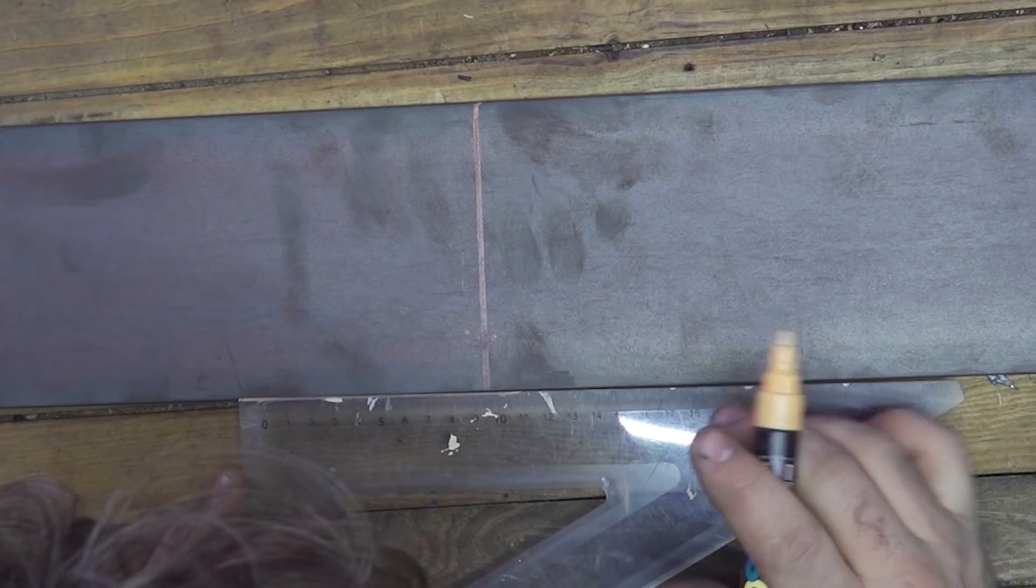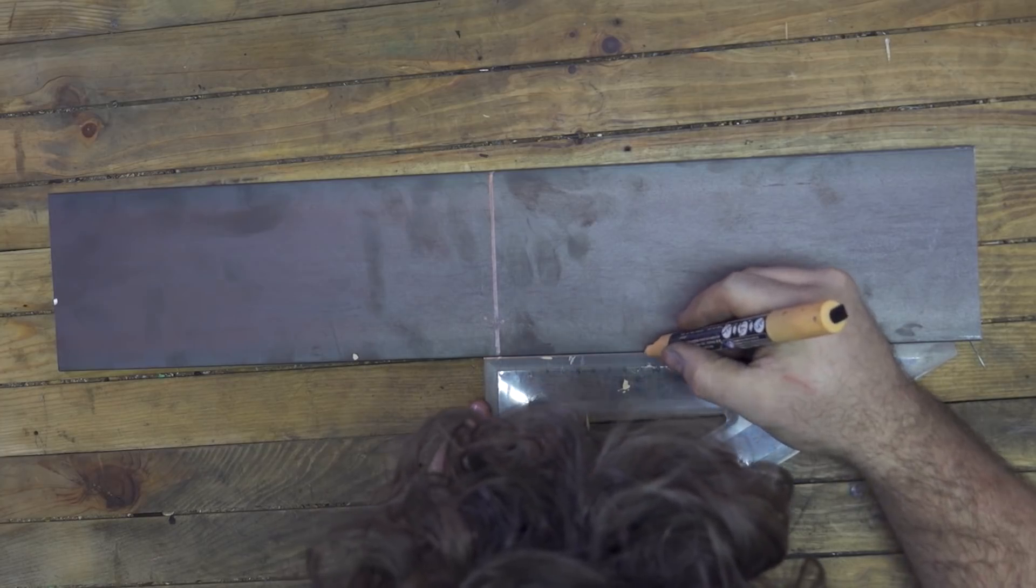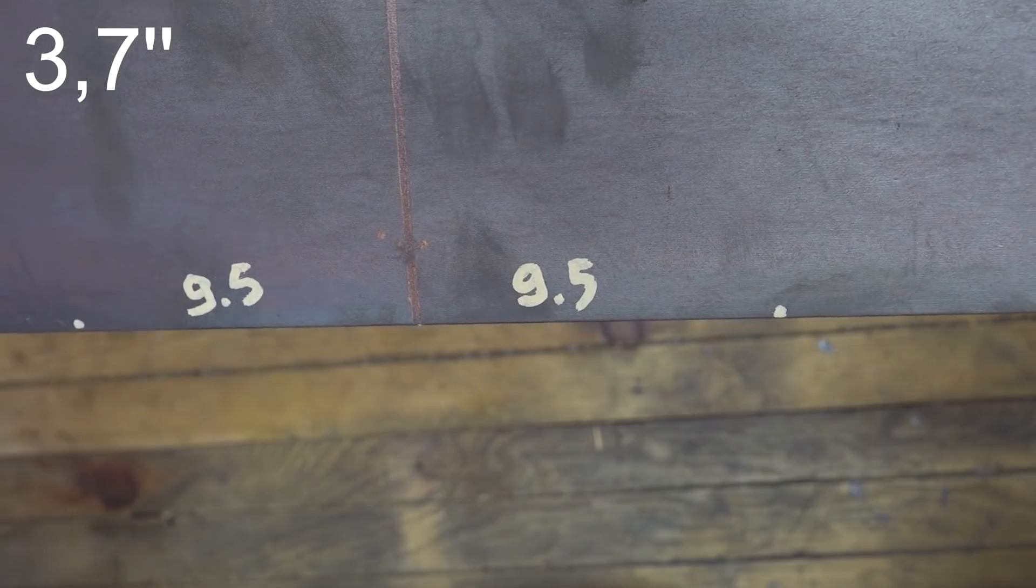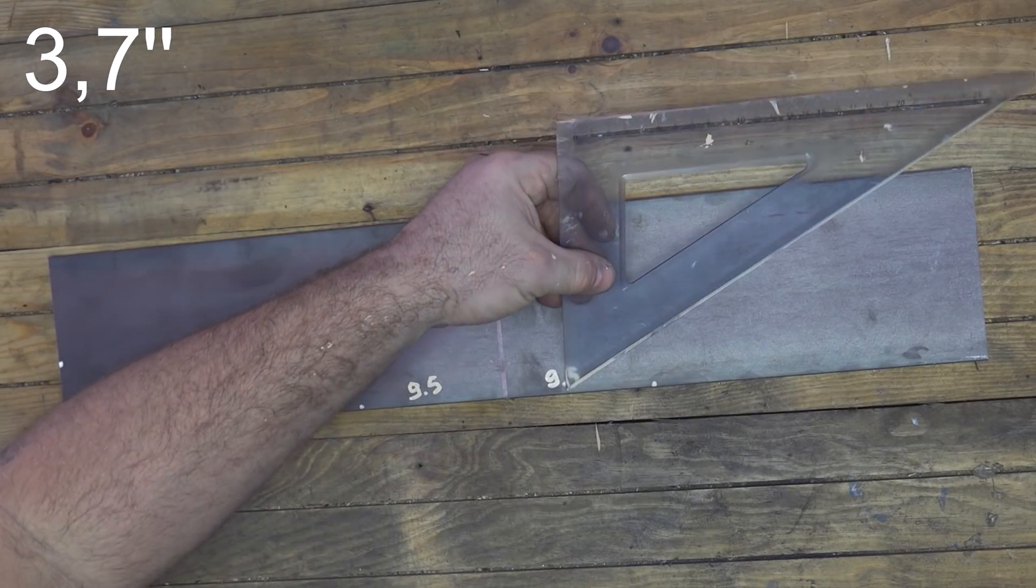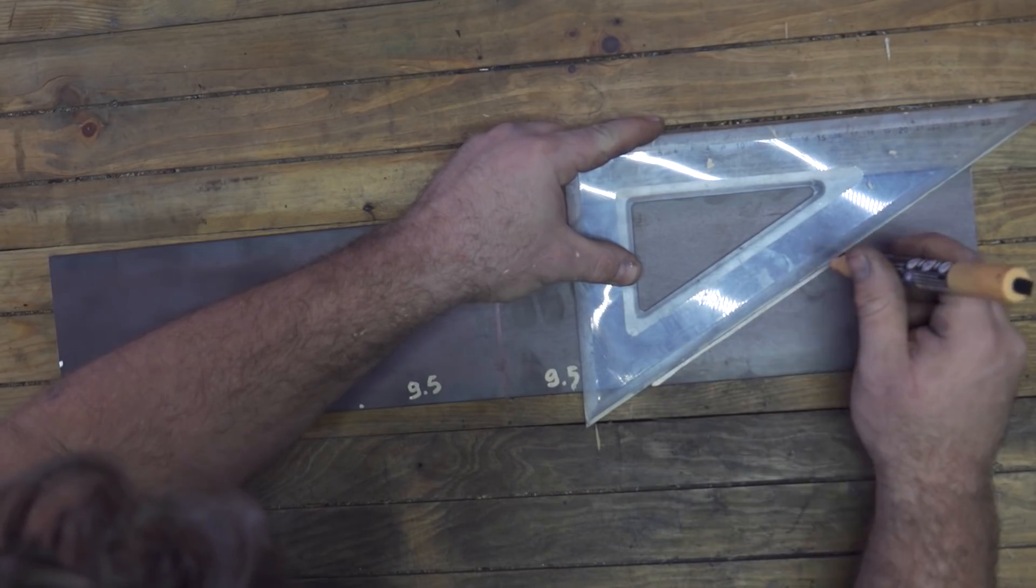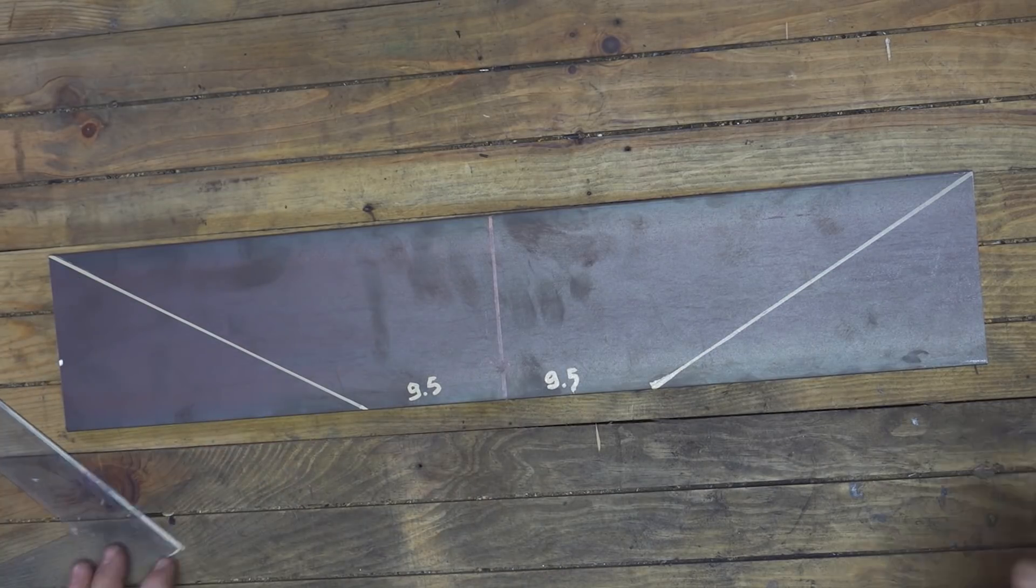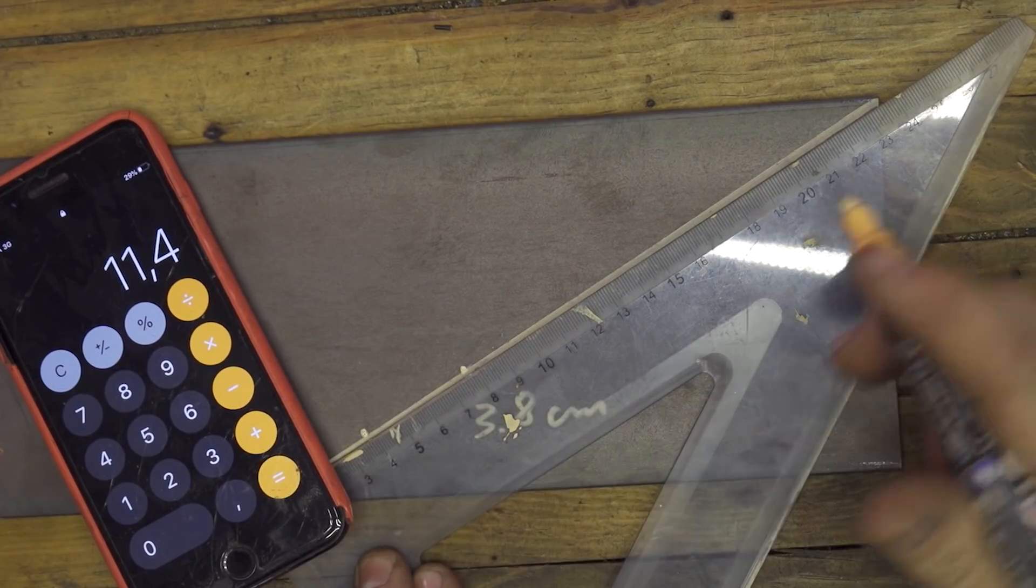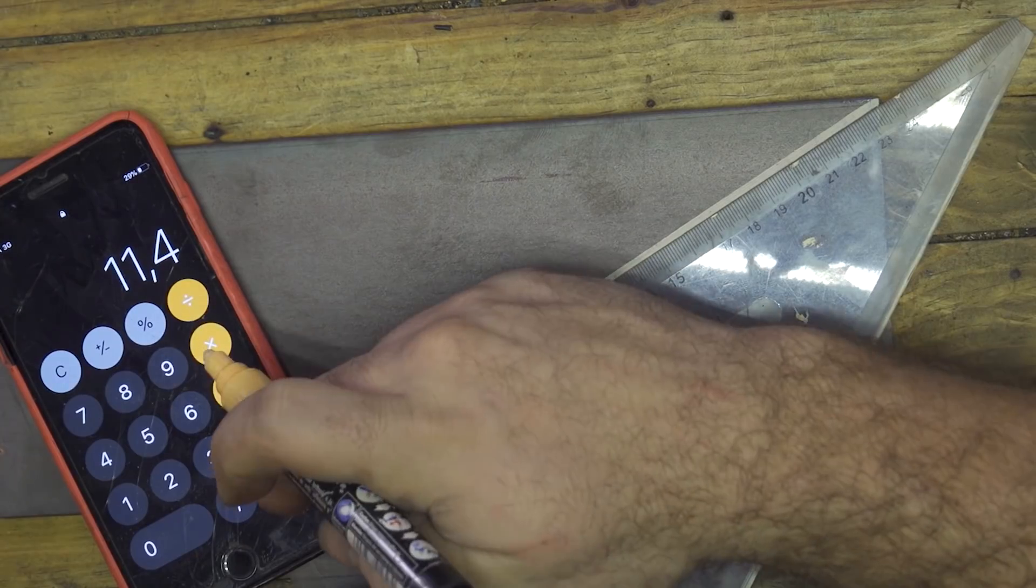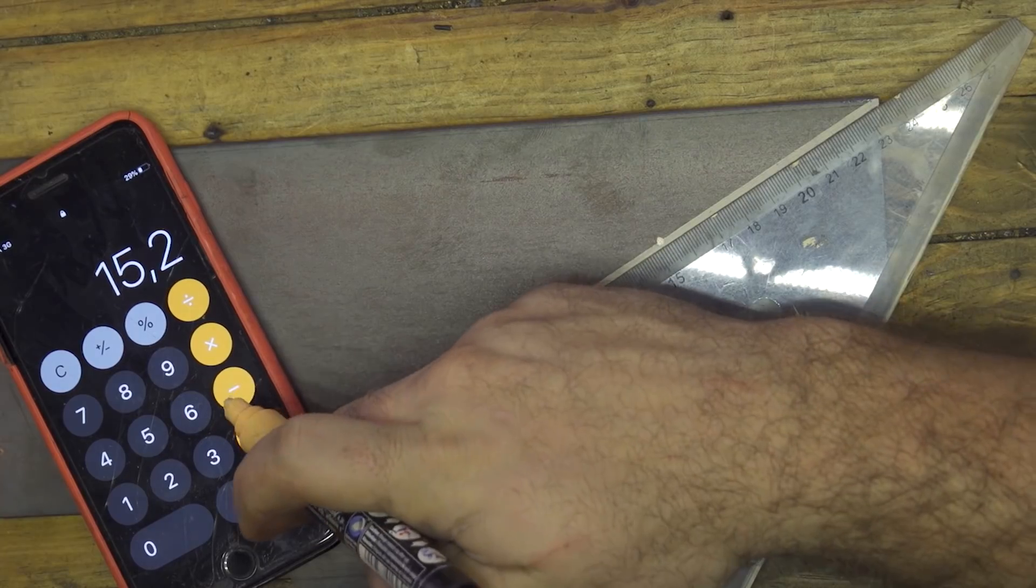I cut it and mark the halfway point, then add 9.5 cm on each side of the half. Now I can trace two lines, one on the right and one on the left, and divide this line into six precise dots. I suggest using a calculator to do this so you're sure you're doing a precise job.